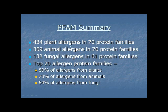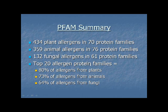Looking at databases: 434 plant allergens are in 70 different protein families; 359 animal allergens are in 76 protein families; and 136 fungal allergens are in 61 protein families. In the top 20 allergen protein families, you can account for 80% of all plant allergens, 73% of all animal ones, and 64% of allergens from fungi.